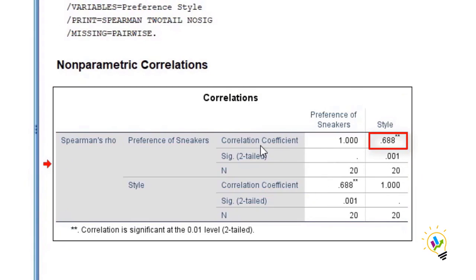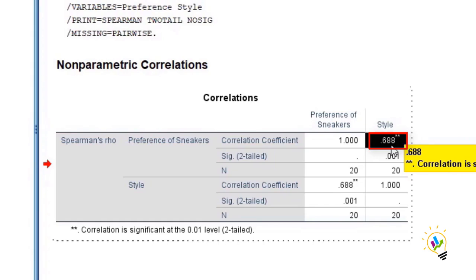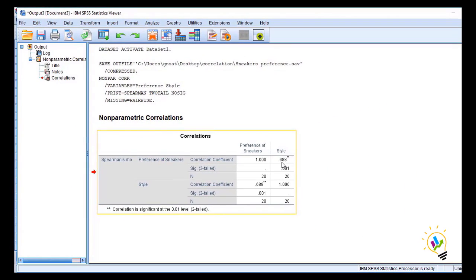The correlation coefficient between preference and style is 0.688. The direction is positive, meaning if style increases, preference also increases. The direction is positive and the strength is 0.688, which is good strength.